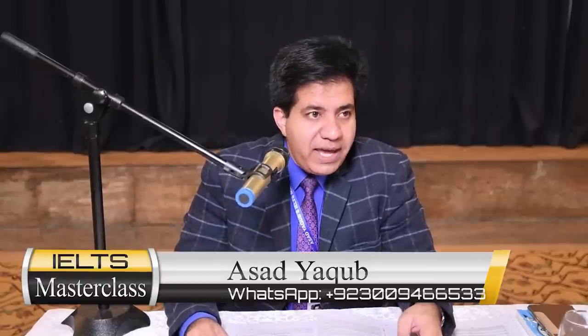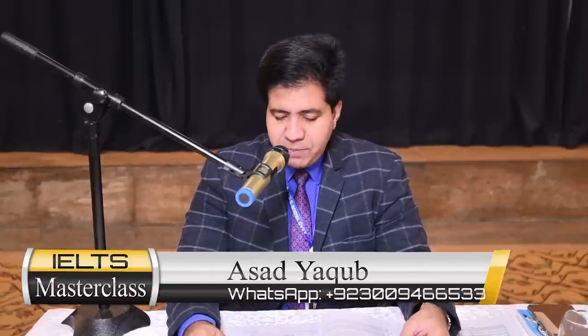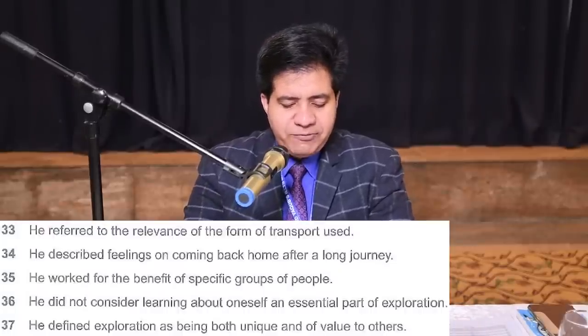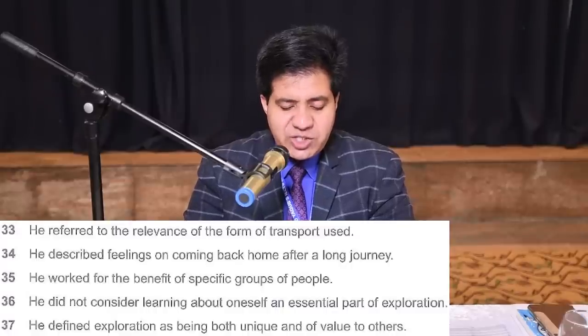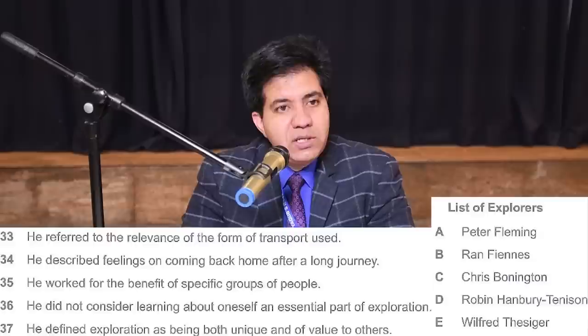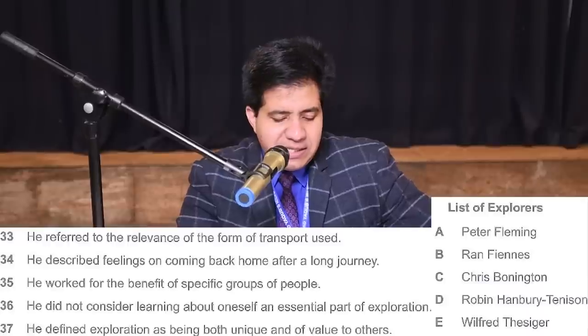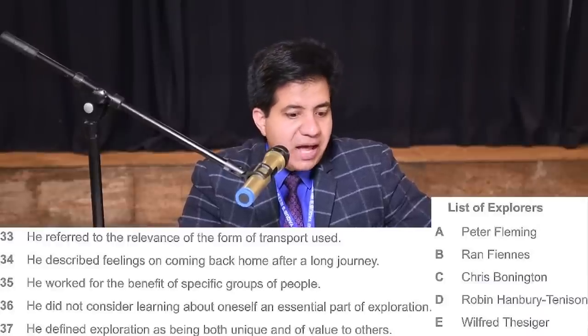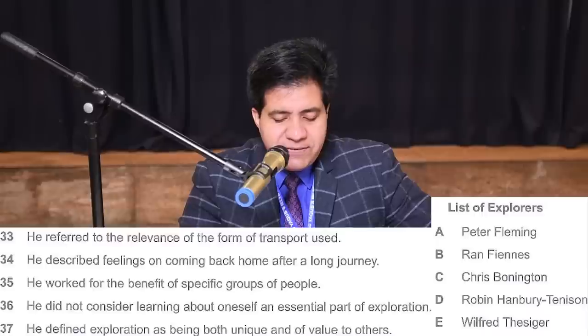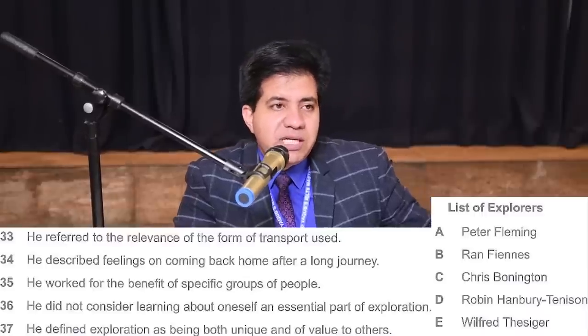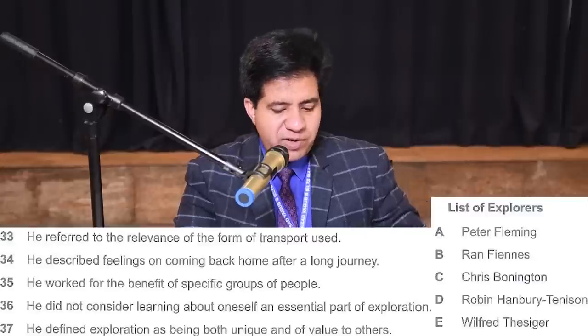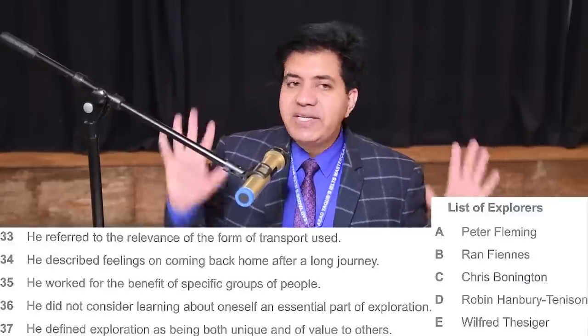Alright guys, we move ahead in the same passage and we are on page number 27, book number 15, Cambridge IELTS Academic. Page number 27, questions 33 to 37: look at the following statements and match each statement with the correct explorer. The names of explorers given are A, B, C, D, E — five options — and questions 33 to 37 are five questions. So you need to match each explorer with the question. Now, in this type of question, the passage is not in question order.